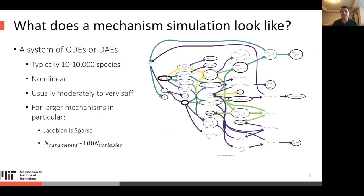When we put all of this together, we get a system of ODEs or DAEs, typically 10 to 10,000 species, usually non-linear, usually moderately to very stiff. For larger mechanisms in particular, the Jacobian is very sparse, although it's usually not structured. Also, the number of parameters tends to be much larger than the number of variables, which is important when you talk about sensitivity analysis, as we will be later.